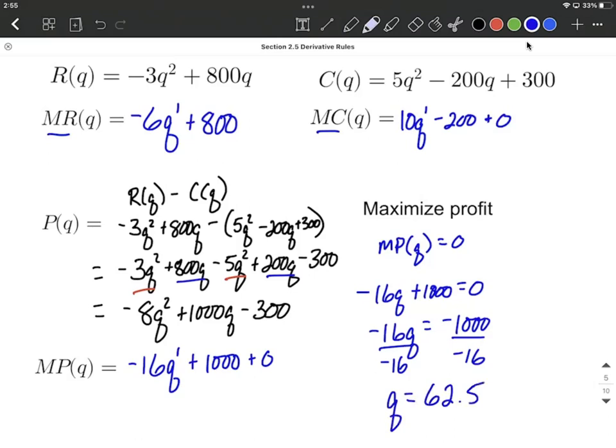Alright, and then if we want to know exactly what the maximum profit was going to be, we would take that back over and plug it in, we would plug into our profit function, and say P of 62.5, replace each one of these q's down here with that and figure out what our maximum profit can be. Hope this helps out as you're working on marginal revenue, marginal cost, and marginal profit.